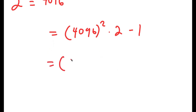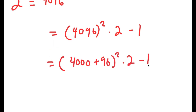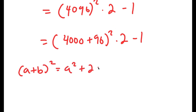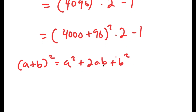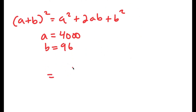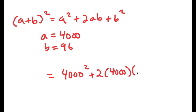I'm going to simplify this as 4000 plus 96, squared, times 2 minus 1. The reason I'm doing this is because 4096 squared is really hard to calculate by itself. Changing it to 4000 plus 96 squared lets me use the property A plus B squared equals A squared plus 2AB plus B squared. Here A is 4000 and B is 96, so this turns into 4000 squared plus 2 times 4000 times 96 plus 96 squared.